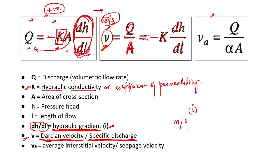If you allow oil — which is a more viscous fluid — to pass through that aquifer, the hydraulic conductivity will change. And if you allow water to flow through another aquifer of different property, the hydraulic conductivity will still change. Hydraulic conductivity is therefore the coefficient of permeability — don't confuse it with simple permeability. Permeability is the ability of only the medium, not the fluid.